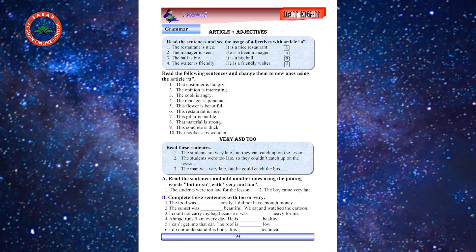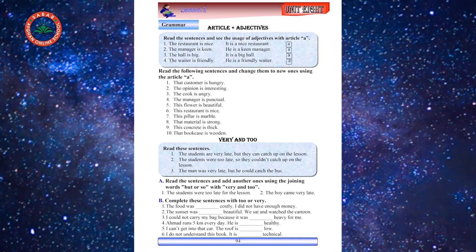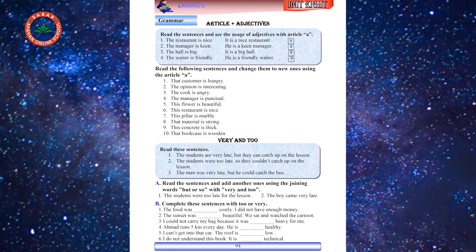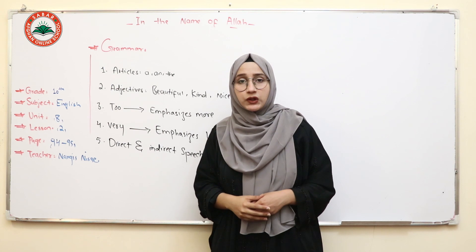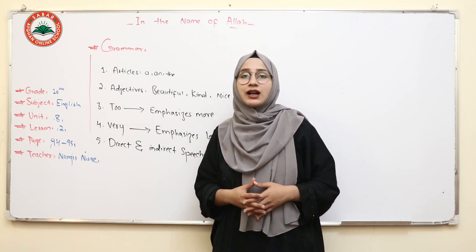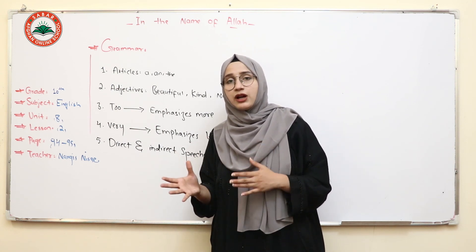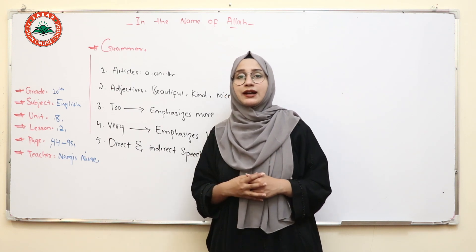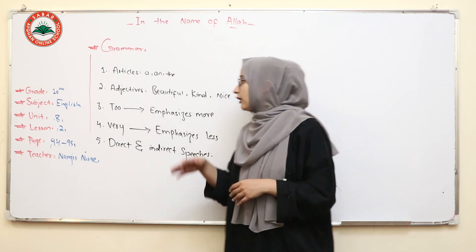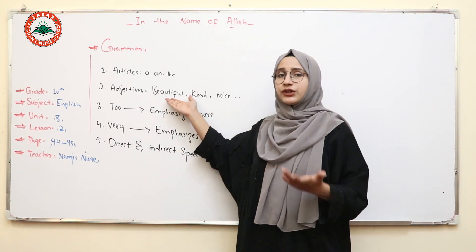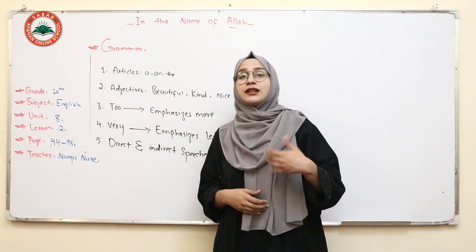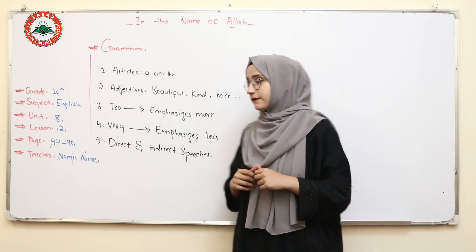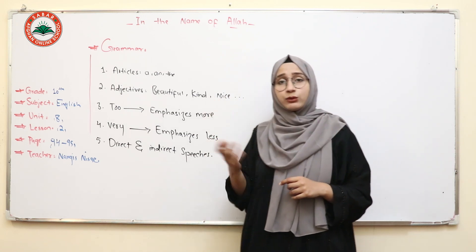So dear students, it's from page 94 to 95, and there are some grammars mentioned there. The second one is adjectives. An adjective is a word which describes a noun or pronoun. For example, we say beautiful: she's a beautiful girl. Girl is a noun and beautiful is its adjective. For example, kind means mehrabana - our teacher is very kind.